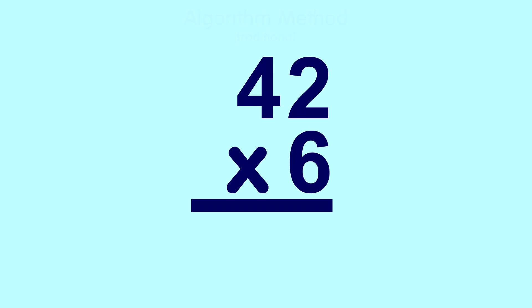Starting with the ones place, I multiply 6 times 2. The answer is 12. Of course, I can't just write down 12 in the answer. I place the 2 from the ones place here, in line with the other ones place. Then, I carry the 1 from the tens place and write it above the 4.